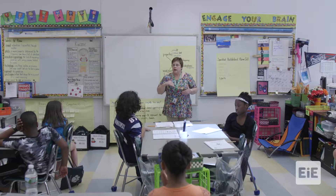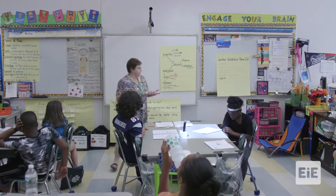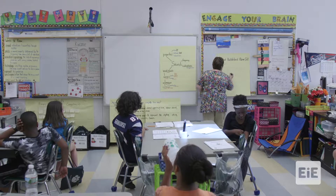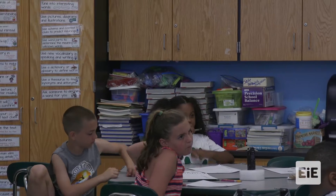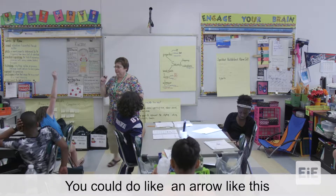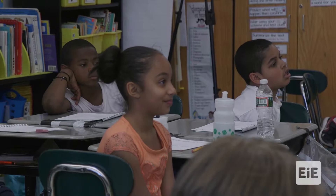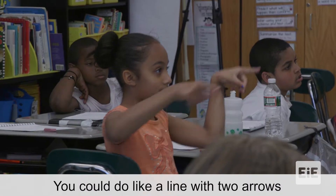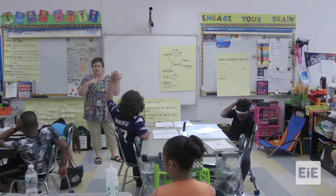We don't have that stuff here. How could we represent low pitch on paper? Like a straight line. So if we did a low pitch with a straight line, how could we do a high pitch? You could do like an arrow up for high pitch. How about the medium pitch? You could do like a line and two arrows. Is that kind of like a spectrogram? Thumbs up if you agree.